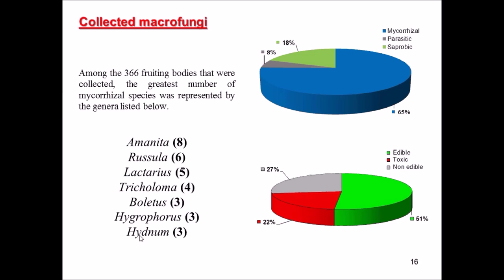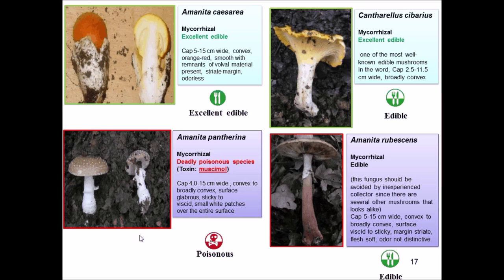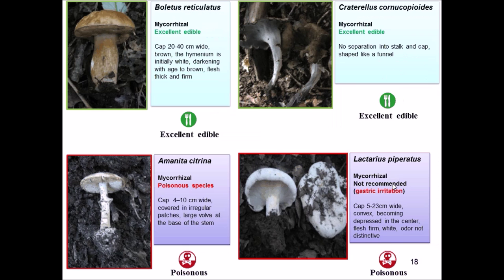Some mushrooms are edible and some are very toxic. Good edible mycorrhizal species include Amanita caesarea and Cantharellus cibarius, which are excellent edibles. We also found deadly or poisonous species like Amanita pantherina, which contains the toxin muscimol, and Amanita rubescens, which is similar to Amanita pantherina but not as dangerous — though you should boil it before eating.